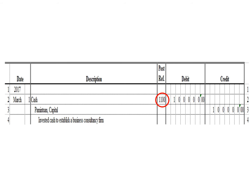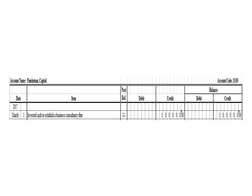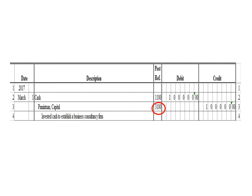Next, let us post the credit entry, which is a credit to capital. This is the ledger for capital. To post our credit entry, we write the date March 1, the description: invested cash to establish a business consultancy firm. Under posting reference we write J1, because all our journal entries from March 1 to March 31 were written on the first page of the journal. Since capital was credited, we write $100,000 under the credit column, and $100,000 under the balance credit column. As of March 1, the balance of capital is $100,000 credit. After posting, we write the posting reference 3100, the account code for capital.